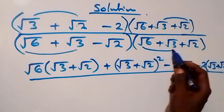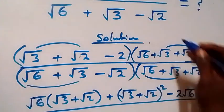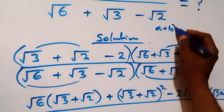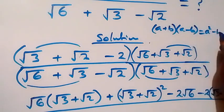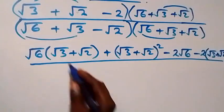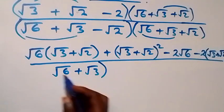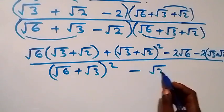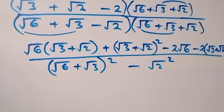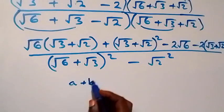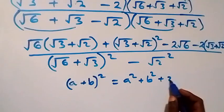For the denominator, we use the identity: (a + b)(a - b) = a² - b². Here this gives us (√6 + √3)² minus (√2)². We should also note that (a + b)² = a² + b² + 2ab.